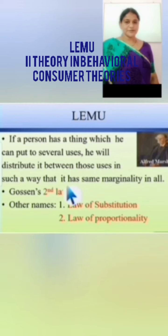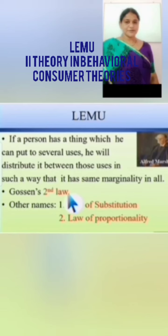LEMU is also called Gossen's second law. Gossen's first law is the law of diminishing marginal utility. LEMU is otherwise known as the law of substitution and law of proportionality — those are other names of LEMU.